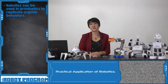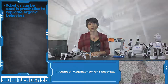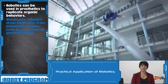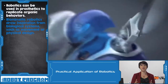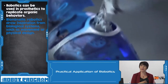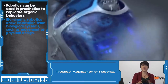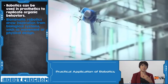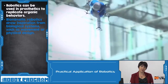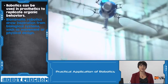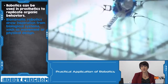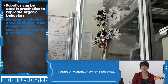We can also take inspiration from the natural form. Biomimetic robots are robots that take inspiration from animals, nature, and plants. They might move in the same way that an animal does, or maybe they're patterned in the same way that an animal is.